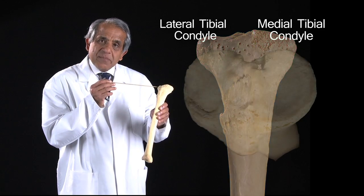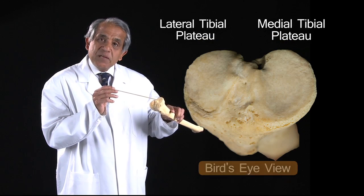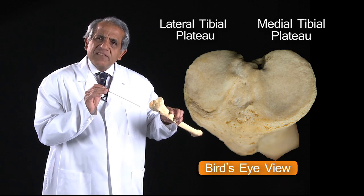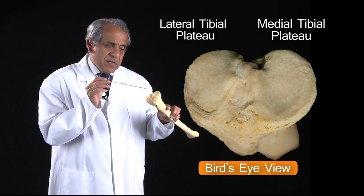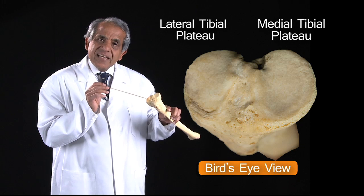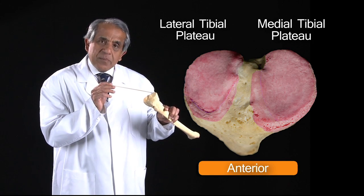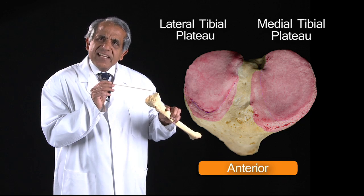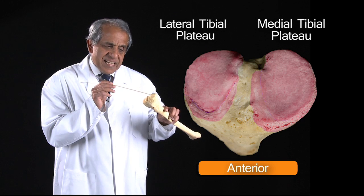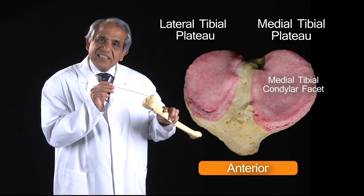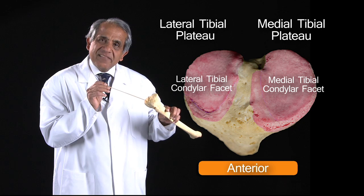The upper surface of the tibia is referred to as the tibial plateau because it is a more or less flat surface. On the tibial plateau you will observe that each of the tibial condyles is surmounted by a smooth, gently concave articular facet — that is the medial tibial condylar facet and the lateral tibial condylar facet.